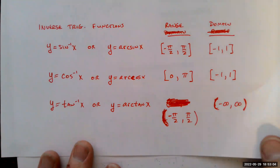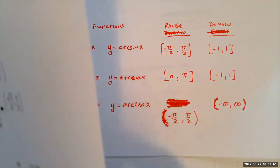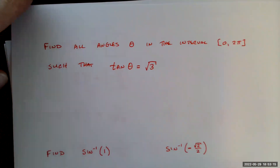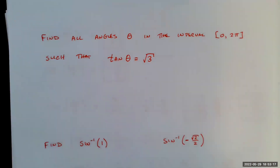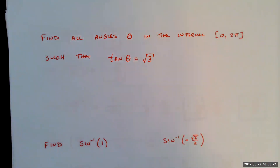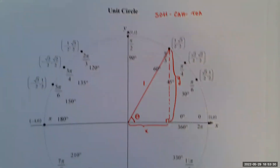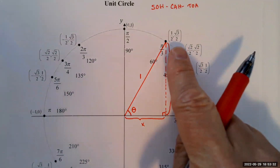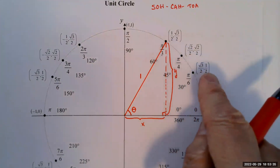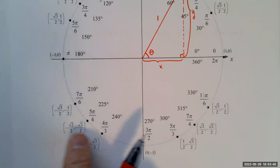Using the unit circle, you should be able to answer questions such as: find all angles theta in the interval from 0 to 2π such that tangent theta equals √3. Tangent is sine divided by cosine — it's positive in the first quadrant where both x and y coordinates are positive, and also in the third quadrant where both are negative.